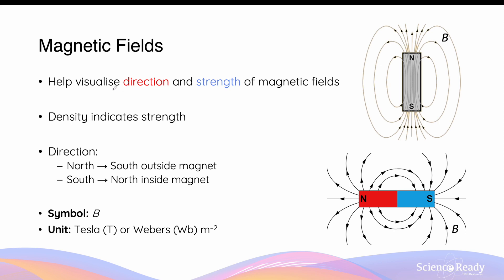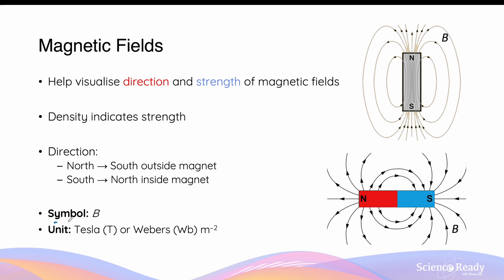Like electric fields, magnetic field lines help us visualize both the direction and the strength of magnetic fields. The density of field lines indicates the strength — the closer the lines, the stronger the field at that location. Field lines are drawn going from the north pole to the south pole outside the magnet, and from south pole to north pole inside the material. The strength of a magnetic field is represented by the symbol B, with SI units of Tesla (T), or Webers per metre squared.